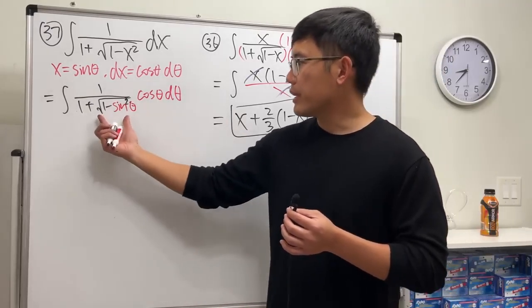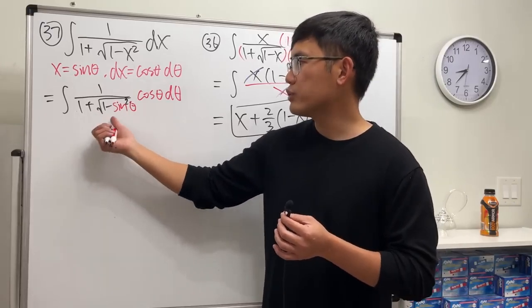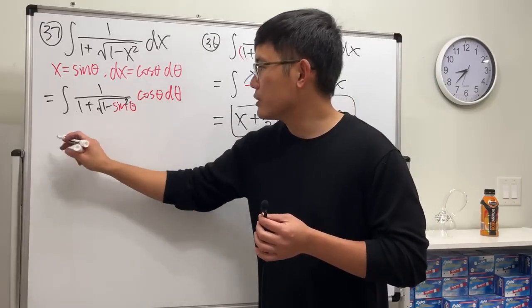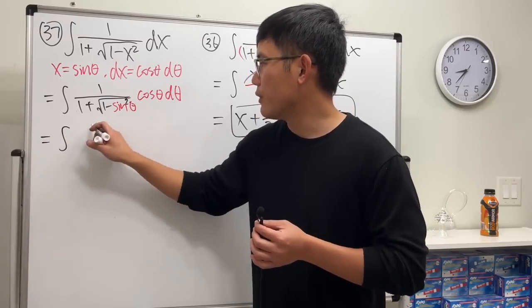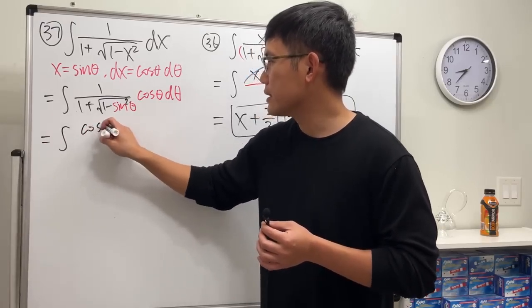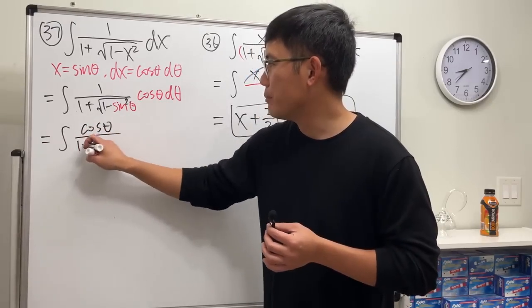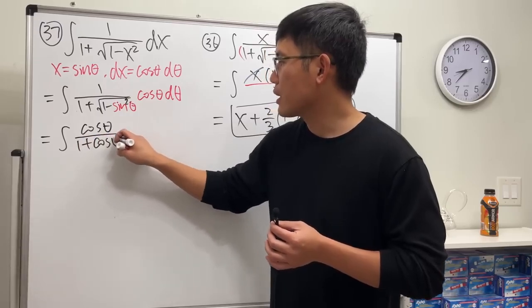This right here is actually just cosine theta, but unfortunately this and that does not cancel. So we are looking at the integral of cosine theta over one plus cosine theta d theta.